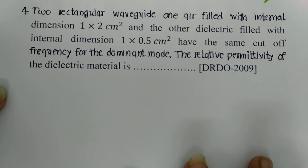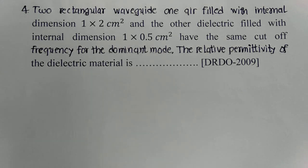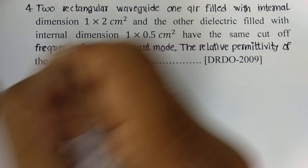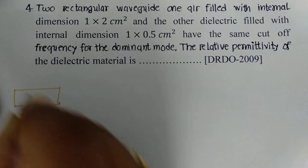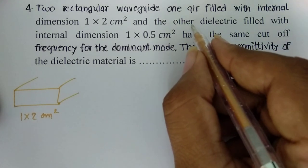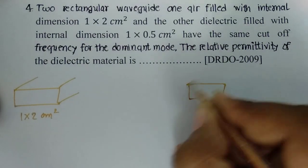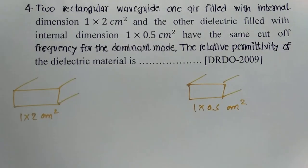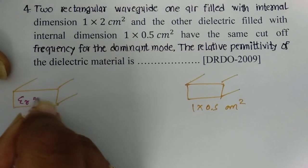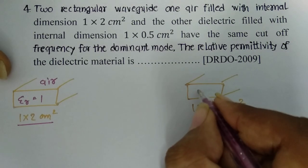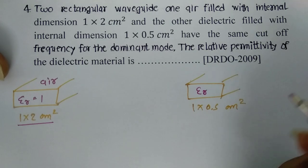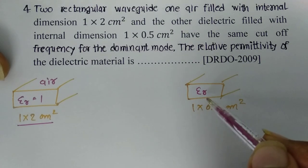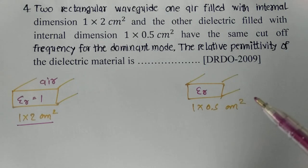One more question from the DRDO 2009 entrance examination: two waveguides are given. The first waveguide has dimensions 1×2 cm² with εr = 1 (air-filled). The second is a dielectric-filled waveguide with dimensions 1×0.5 cm² and some εr. Both have the same cutoff frequency for the dominant mode, and we need to find the relative permittivity of the dielectric material.